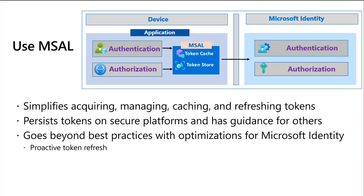Where we go beyond best practices is in concepts like proactive token refresh, which we'll discuss in relation to continuous access evaluation. We also have resiliency built into Azure AD today — a decorrelated backup system that can issue tokens even with our primary system completely down. While we can do automatic switchovers, if the part of our infrastructure that handles that automatic switch is down, MSAL can fall back and do the automatic switch for you. These are the kinds of things we can build into our libraries because they're intimately familiar with our infrastructure.